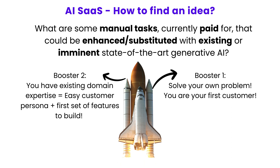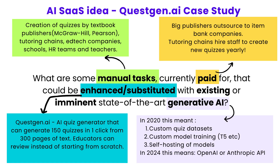Apart from the main thing — converting manual tasks and enhancing or substituting them with AI — if you have these additional boosters of solving your own problem or having domain expertise, that's powerful. Domain expertise doesn't necessarily have to be yours directly. For example, if your father or mother runs a school, you have direct domain expertise access to edtech. That's also a booster. Let me quickly walk through how Question.ai, which generates quizzes from text, fits into this framework.